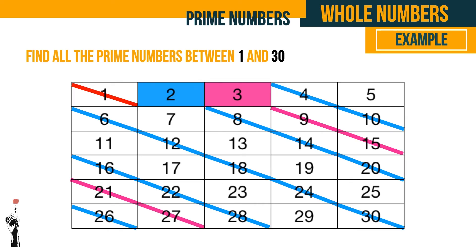Four is already scratched out, so we move on to five and scratch out all multiples of five. Ten, fifteen, and twenty are already scratched out; now we scratch out twenty-five. Then we move to seven — we leave seven alone but scratch out all multiples of seven: fourteen, twenty-one, and twenty-eight.